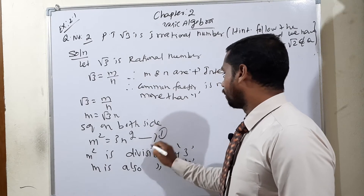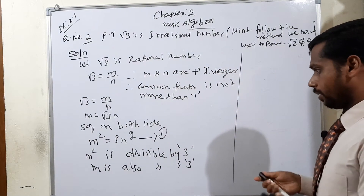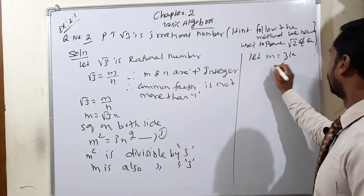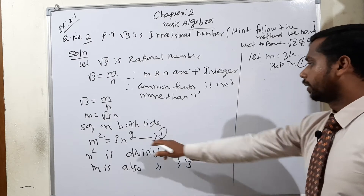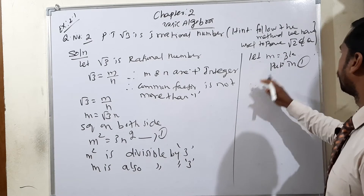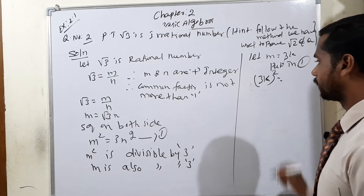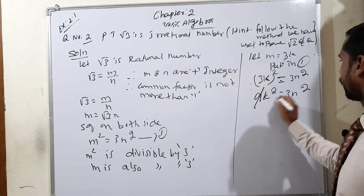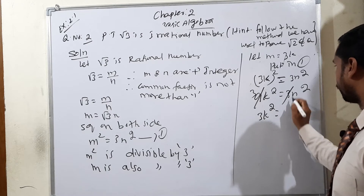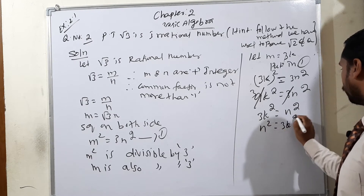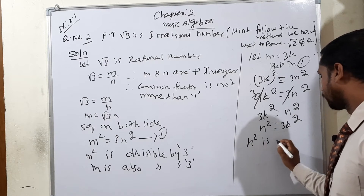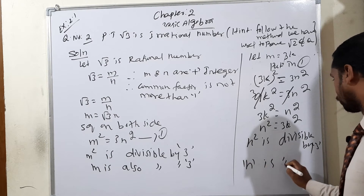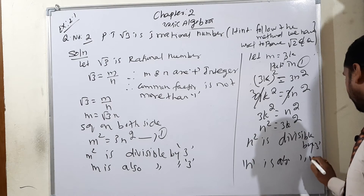Now, considering equation number 1: since m is divisible by 3, let m equal 3k. Substituting: 3k whole squared equals 3 n squared, which gives 9k squared equals 3 n squared. Cancelling 9 and 3 gives 3k squared equals n squared. So, n squared is divisible by 3.